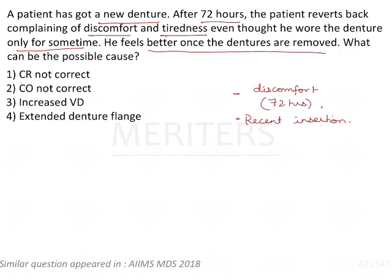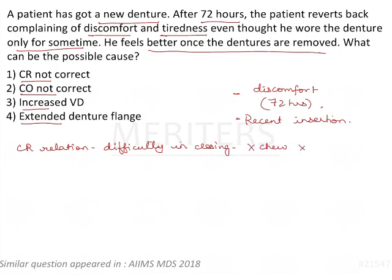The possible causes are: CR not correct, CO not correct, increased vertical dimension, and extended denture flange. If centric relation is not correct, the patient will have difficulty closing in maximum intercuspation — difficulty to chew, difficulty to seat, and difficulty to use the dentures. The patient will not be able to come back to a repeatable position and will feel that the teeth don't match.